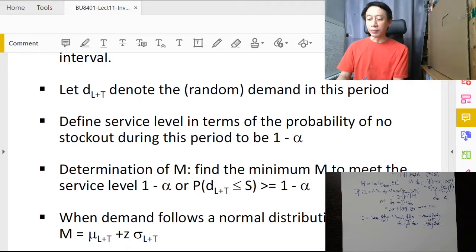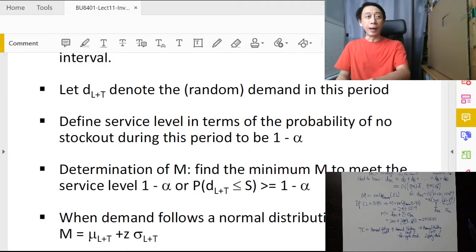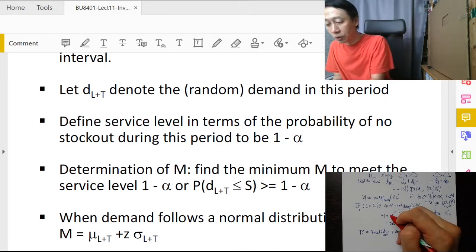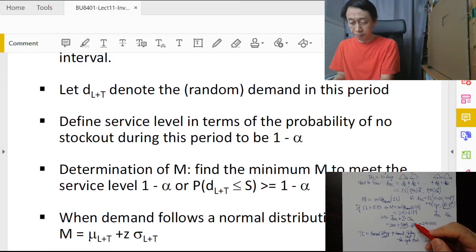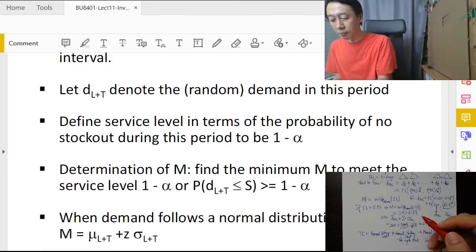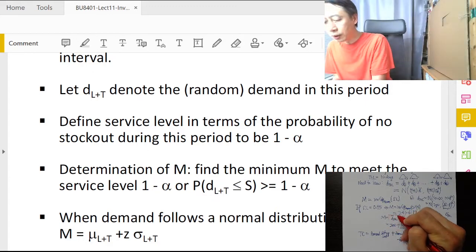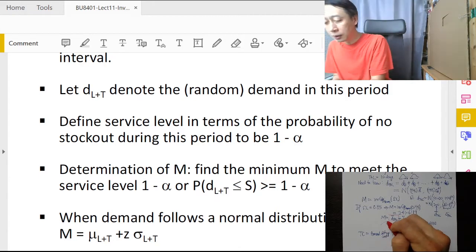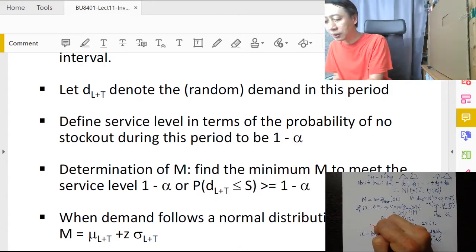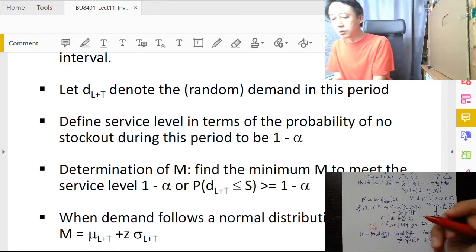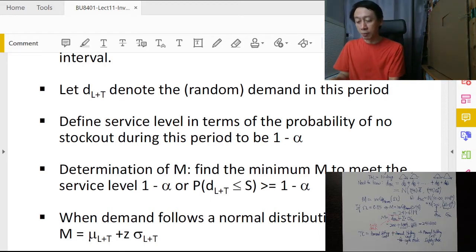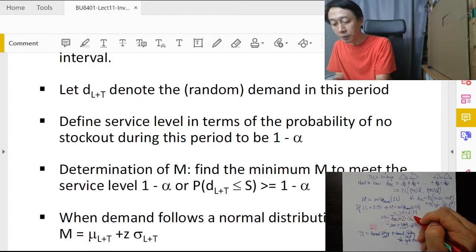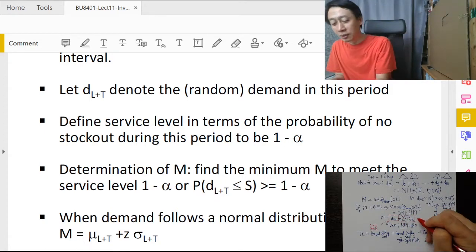The idea of safety stock is the same as what we had earlier on in the continuous review model with dynamic demand. If we look at the formula for M, assuming that the demand is normally distributed, this portion is the average demand and this is going to be our cycle stock. We have this amount in our warehouse, that part of the M is to meet average demand, that's meant for sale. This part of the inventory that we hold is not meant for sale.